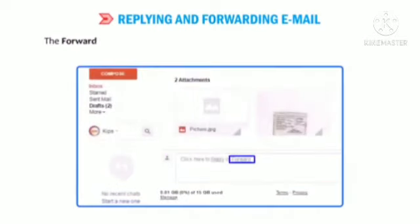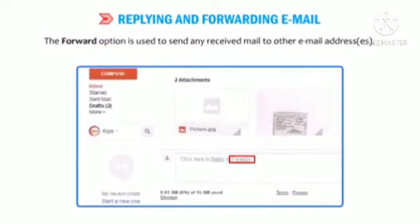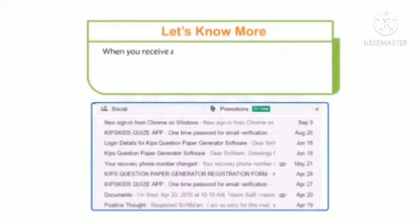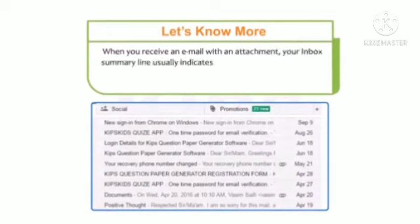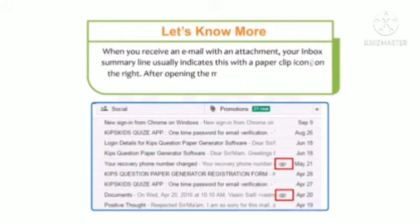The forward option is used to send any received mail to other email addresses. Note that when you receive an email with an attachment, your inbox summary line usually indicates this with a paper clip icon on the right. After opening the message, we can click on the attachments icon.